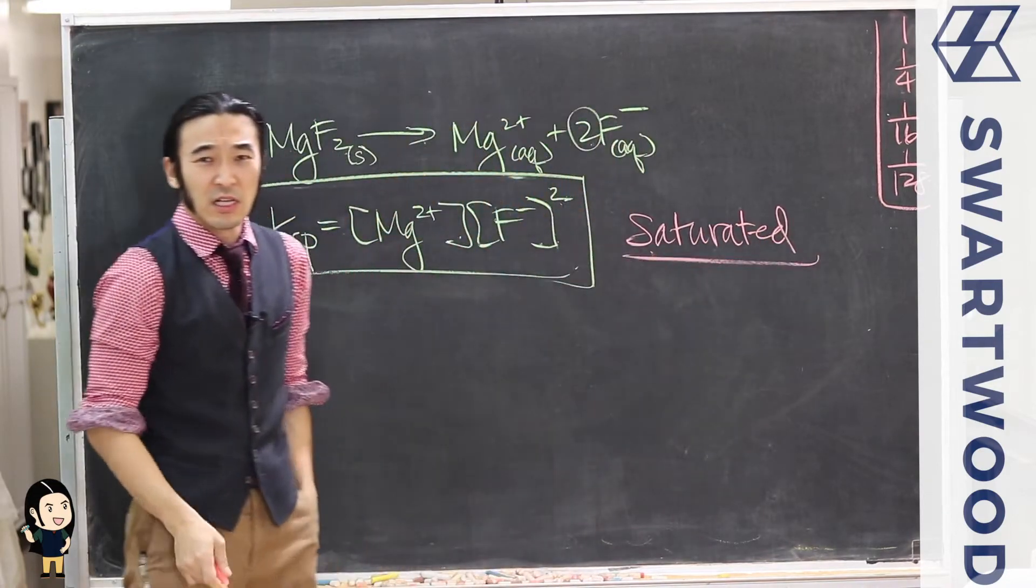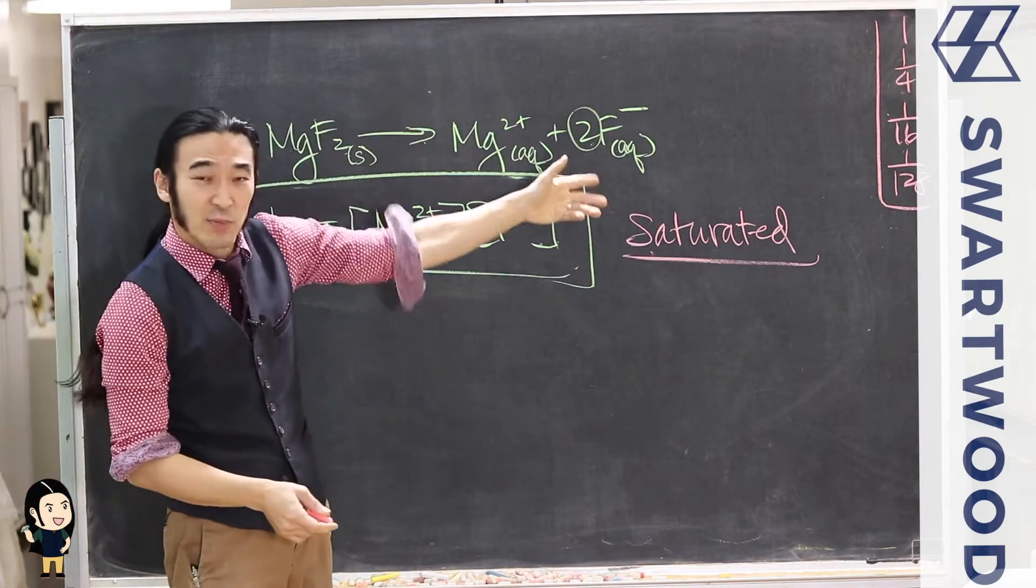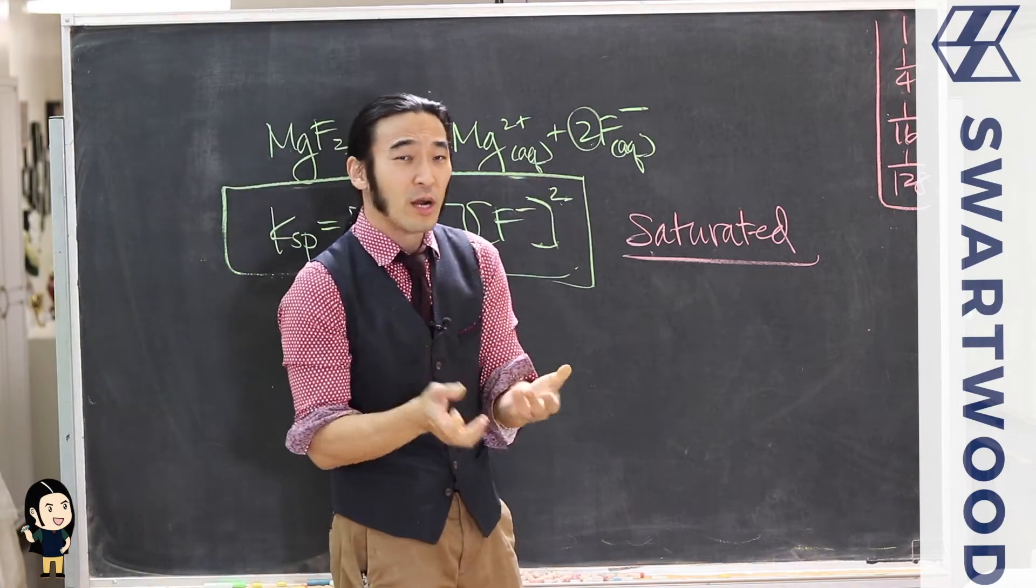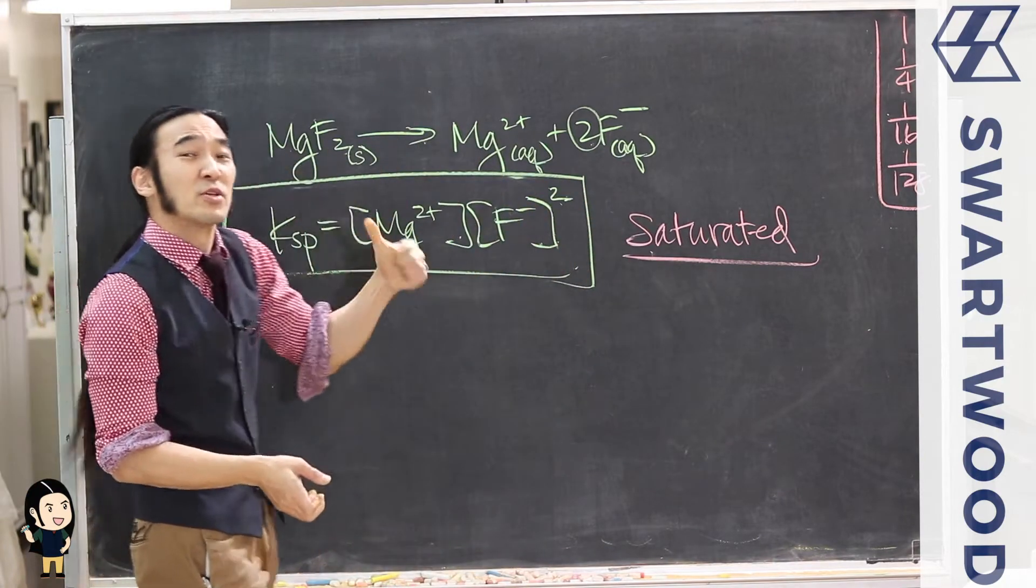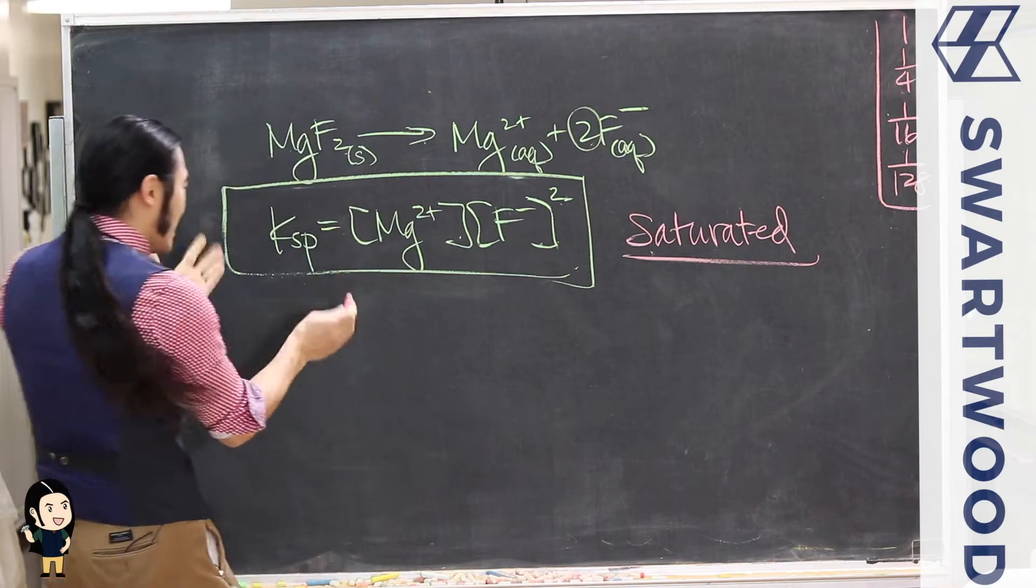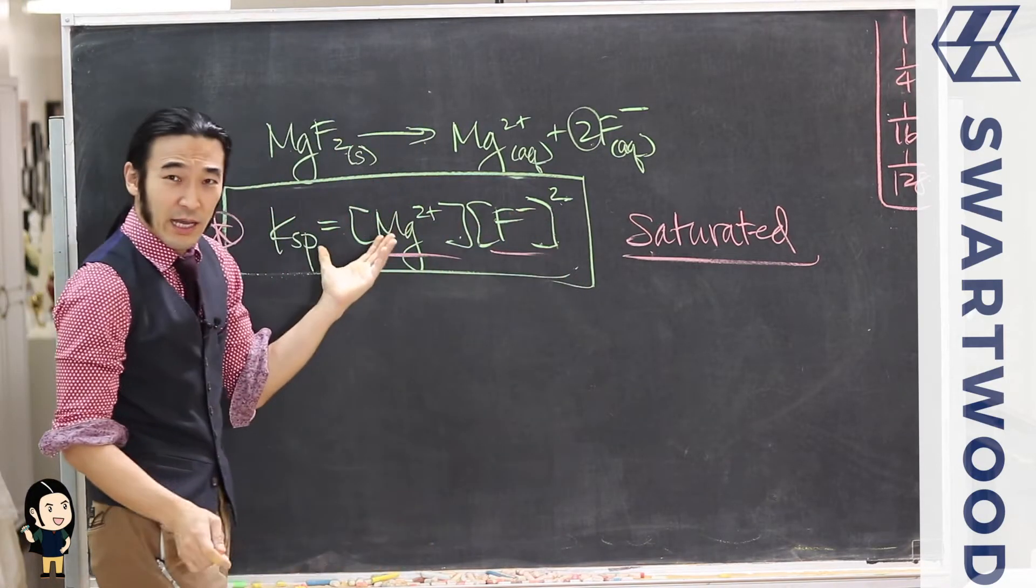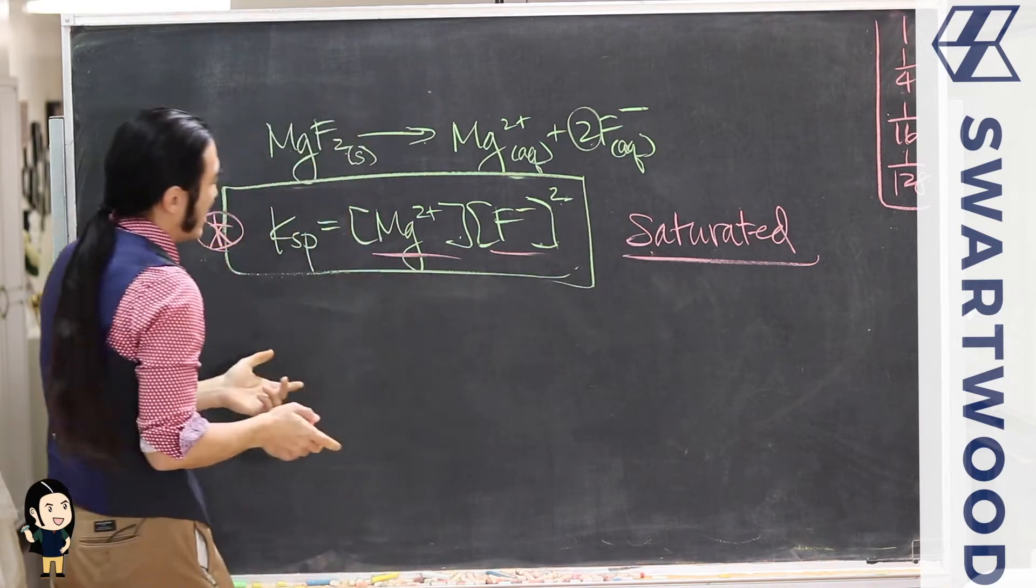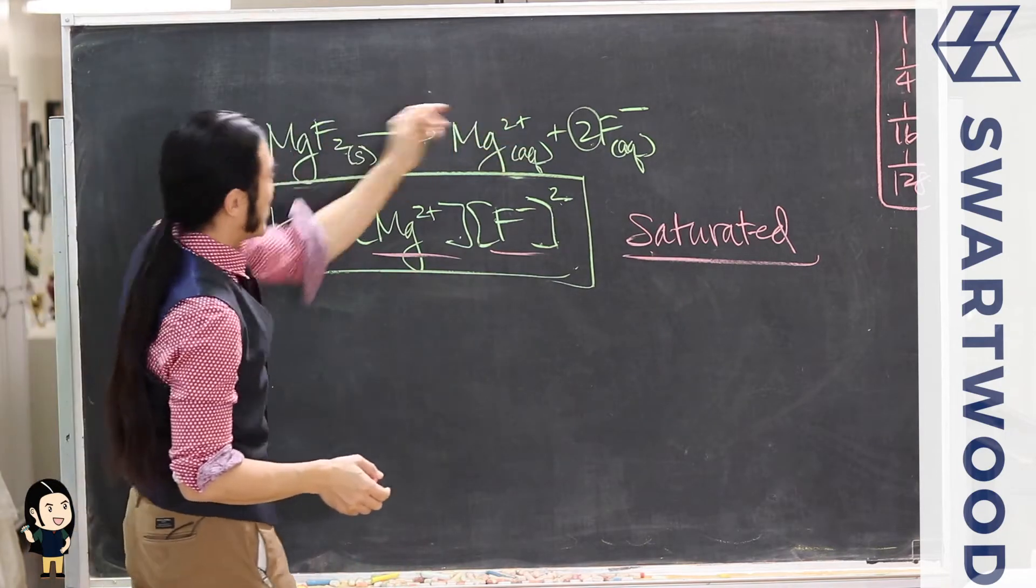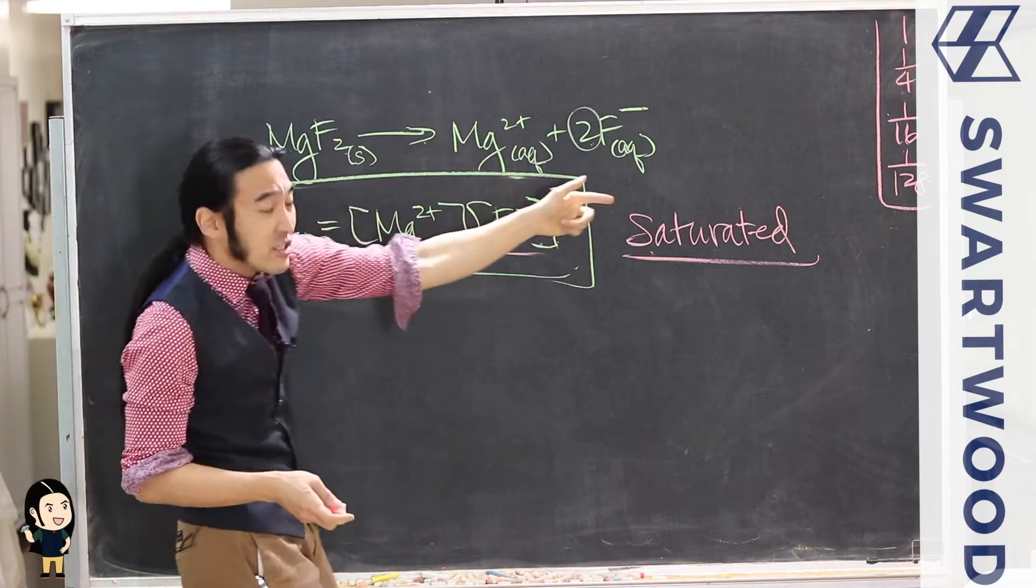Which basically means full—you've put in as many of these ions as you possibly can. If you try to put in more, they're just going to pop right back out; they're going to precipitate out. Okay, so the link here is that this KSP value tells you what these guys look like when you're at saturation.